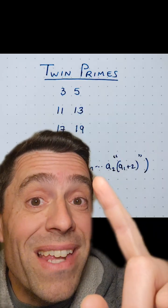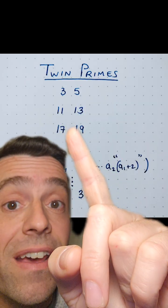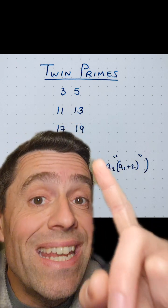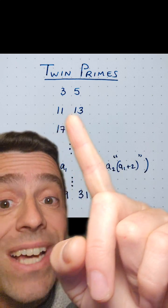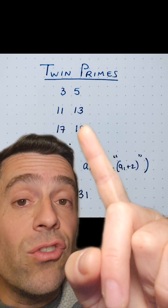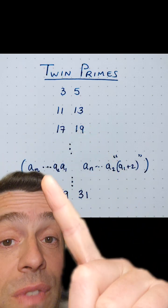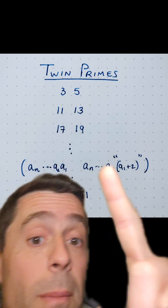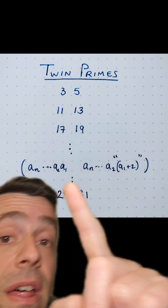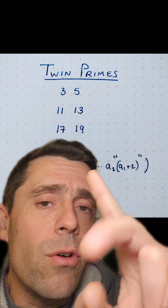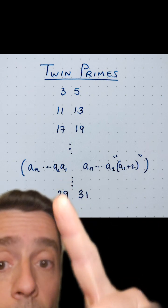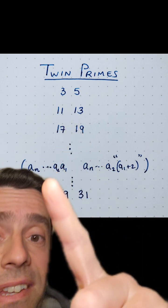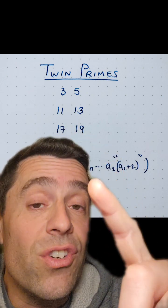So twin primes in base 10 is a number such that this number is prime, and when you increase the units digit — the least significant digit — by 2, you get another number that is also prime. So if this is the expansion of your first prime, then you increase A1 by 2. And if this is prime, then these are twin primes. You have to be careful that if A1 is a 9, you have to do some carryover. But basically, the units digit increases by 2.